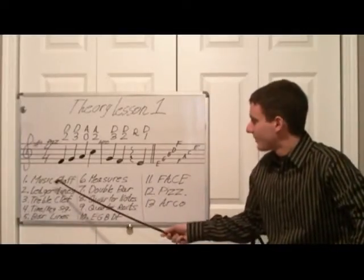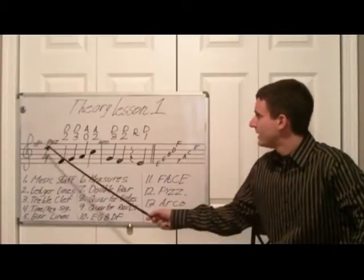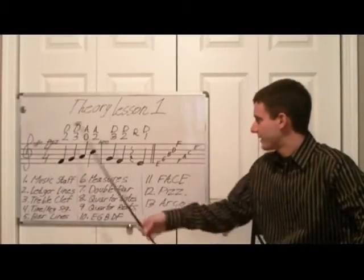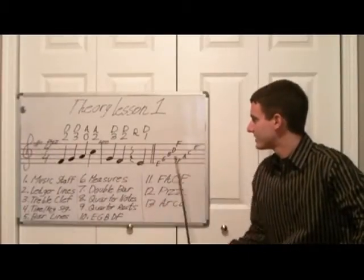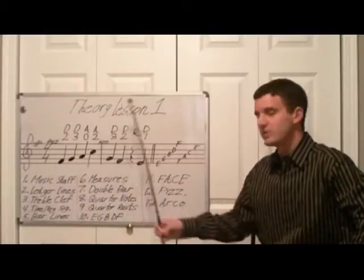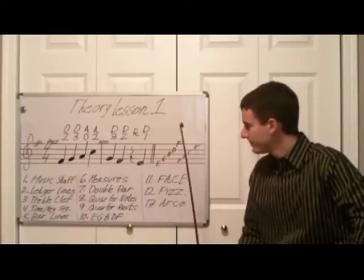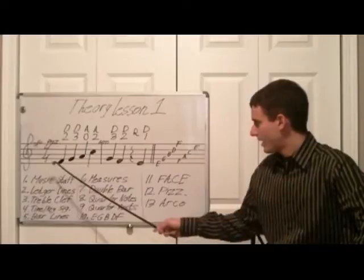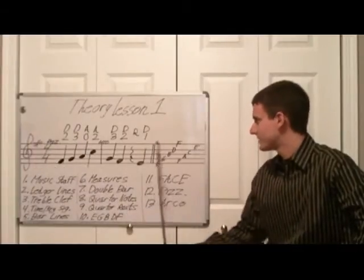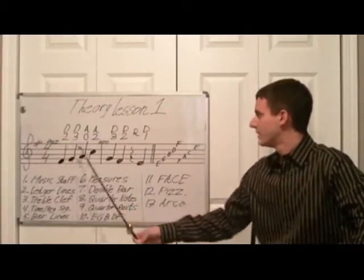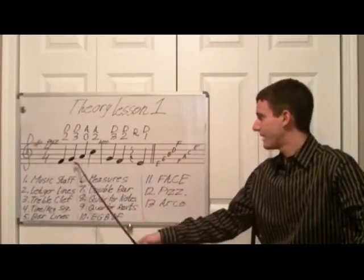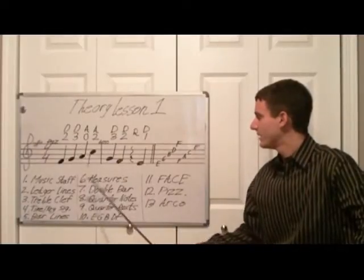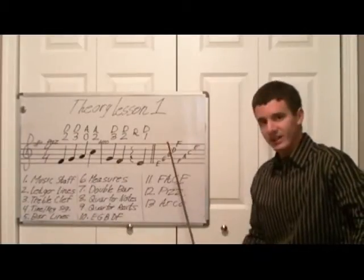The first thing we're going to learn is the music staff. The music staff is all these lines basically combined — everything that you see here is considered the music staff. Ledger lines are the actual horizontal lines, and there are five different lines: one, two, three, four, five.